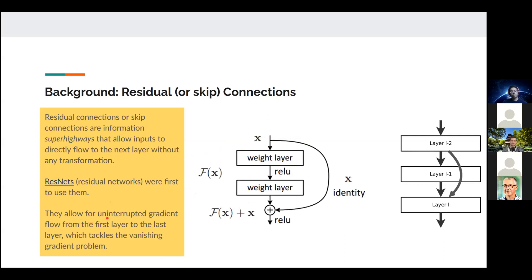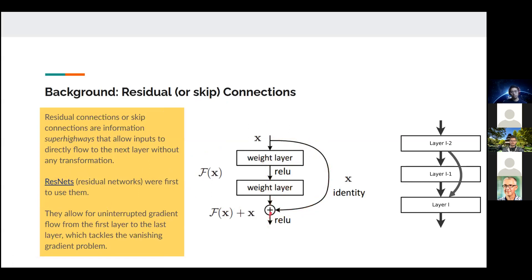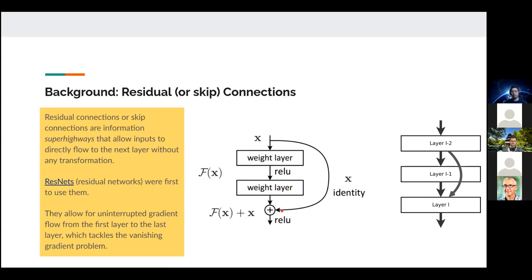Residual connections allow uninterrupted gradient flow — during back-propagation, errors can flow directly without passing through intermediate layers. This tackles the vanishing gradient problem, where extremely small gradients fail to update weights sufficiently, causing the network to stop learning. By providing a direct path for gradients, residual connections enable effective training of much deeper networks.